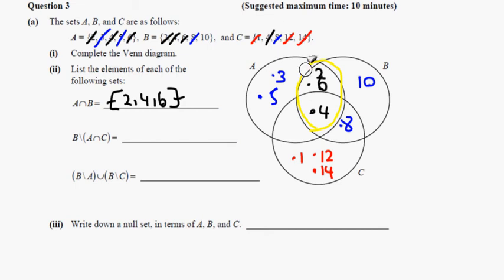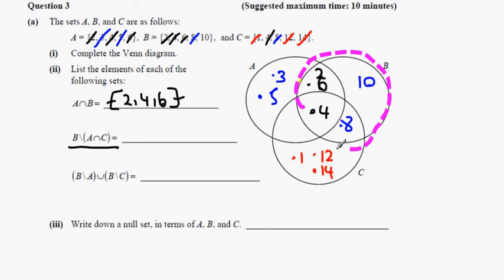What we have next is everything in B that's not in A intersection C. Everything in circle B, but we exclude the part that's in A intersection C — so we discount that red part. What we have left is 2, 6 and 10.